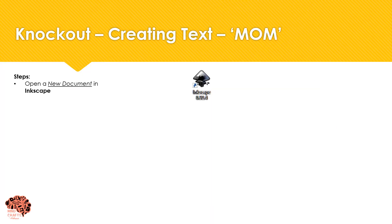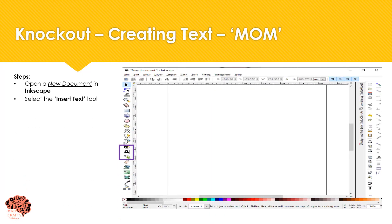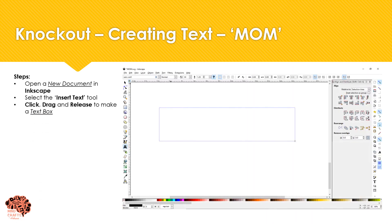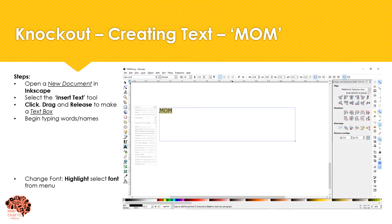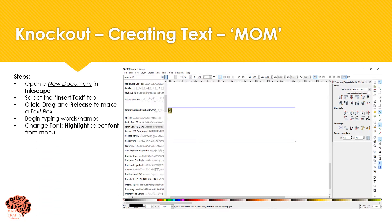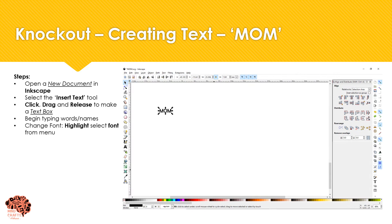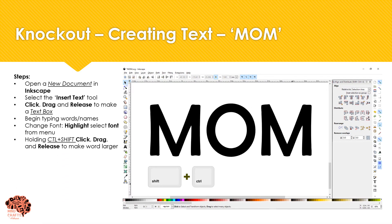In Inkscape we're going to open a new document and on the left side we're going to select the insert tool button. We're going to drag and drop in order to create a text box. In that text box you can begin typing the words that you want, then highlight them and select the font from your menu. After your font has been selected you can hold Ctrl+Shift and click and drag your text in order to make it larger.